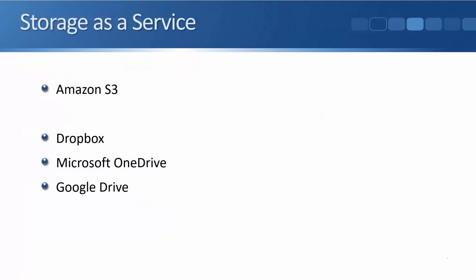The last example is storage as a service. A well-known example is Amazon S3, which provides web-based storage over at AWS for things like files, images, and more. This can be cost effective because Amazon has virtually unlimited amounts of storage, saving you from having to provide it yourself. Other examples of storage as a service — not always called that — include Dropbox, Microsoft OneDrive, and Google Drive, which you're probably already using yourself.